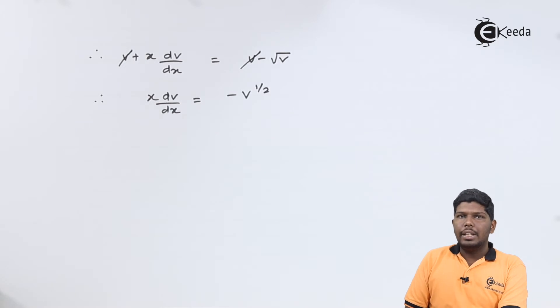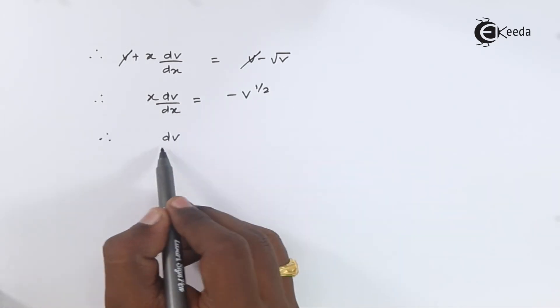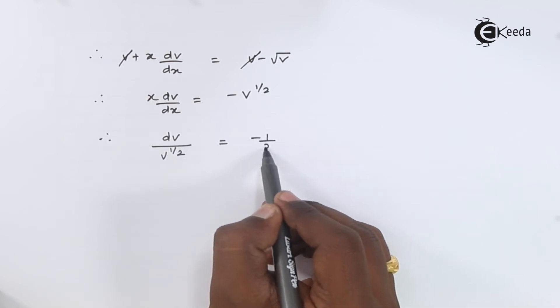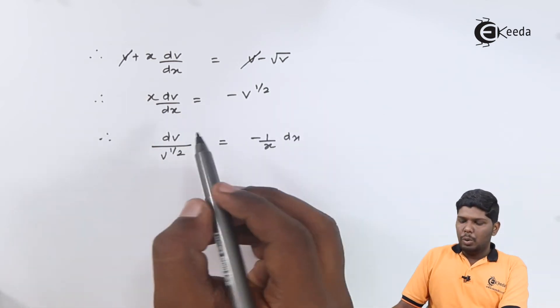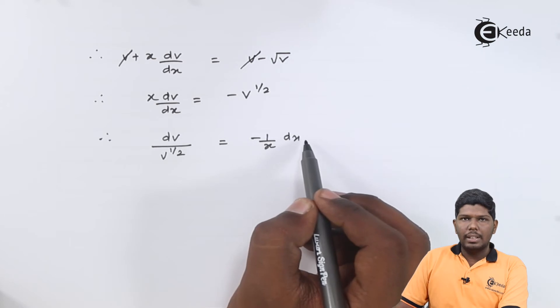Now, here you can interchange the variables. That will give you dv upon v raise to half is equal to minus 1 by x dx.